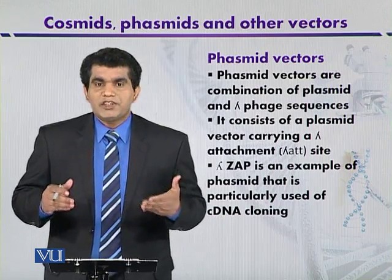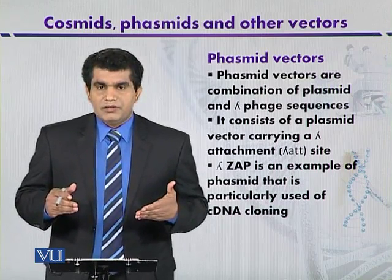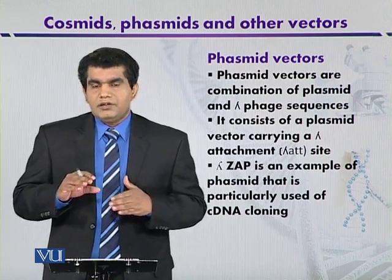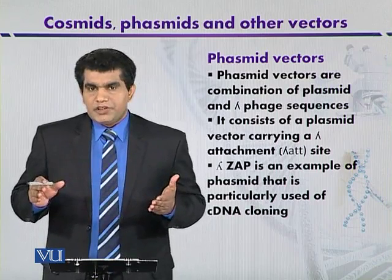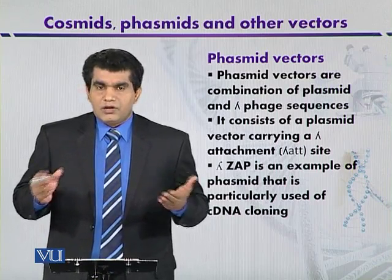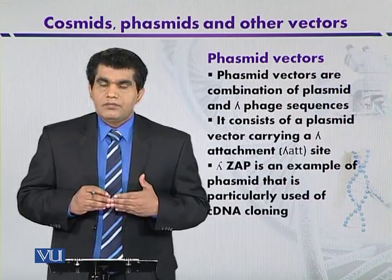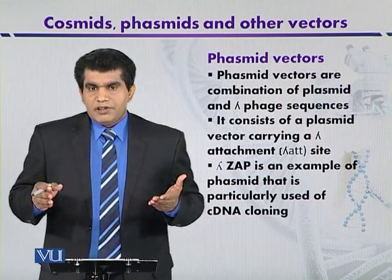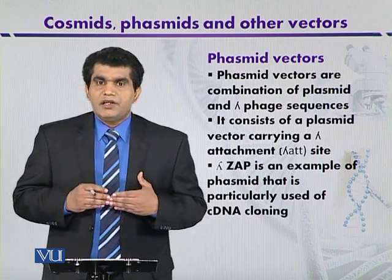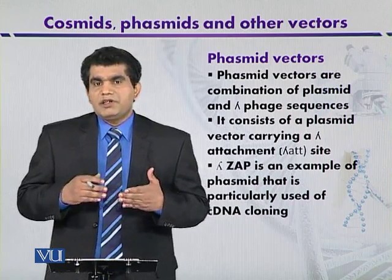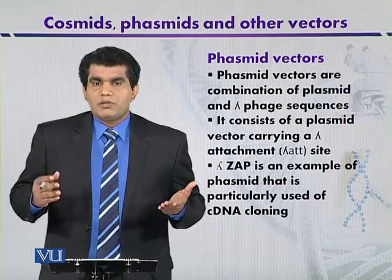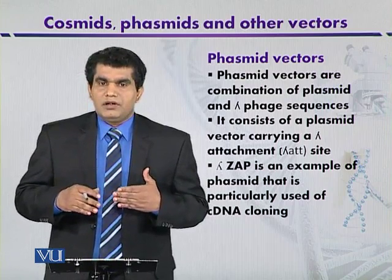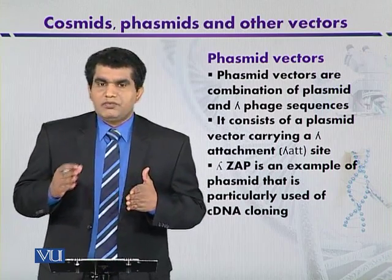The maximum length of foreign DNA insert in lambda ZAP is 10 kilobases. Another advantage is that it may contain multiple cloning sites for different types of restriction enzymes, so different enzymes can be used for cloning purposes.